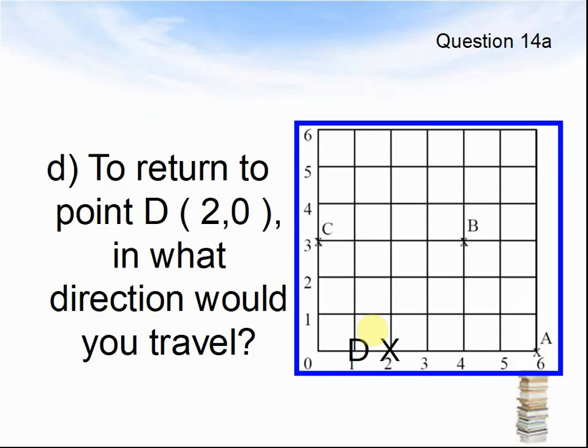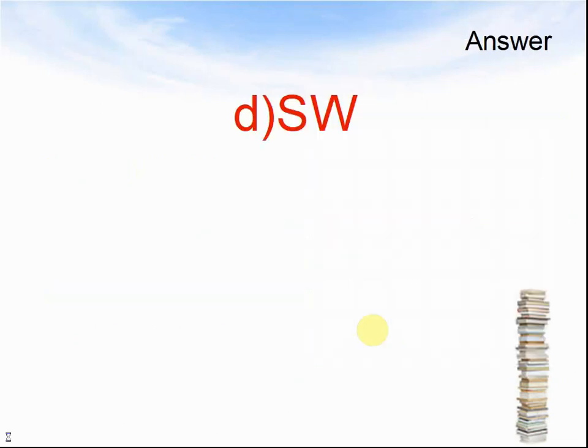To return to point 2.0, in what direction would you travel? From B. Pause the video until you think you know the answer. Here comes the answer. South-west is the answer.